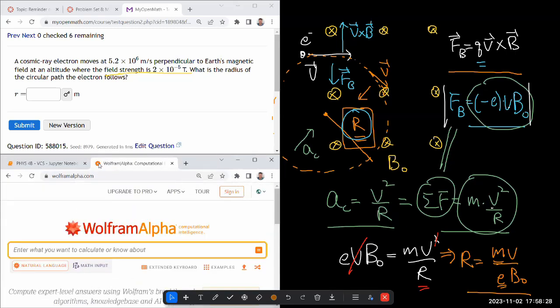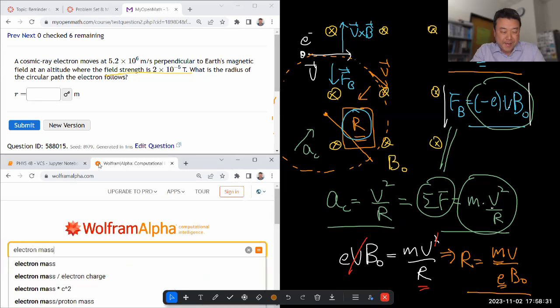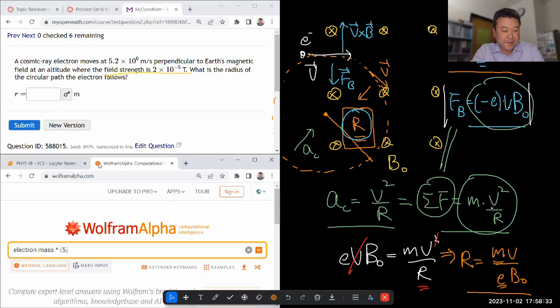So let me use Wolfram Alpha instead. If I use Wolfram Alpha, I can write down electron mass times the speed they gave us, 5.2 times 10 to the power of 6 meter per second. With Wolfram Alpha, I like to put in units. I have to, otherwise the constants it looks up is going to be unusable. So all of that divided by elementary charge, less chance of making it negative, times the magnetic field strength, 2 times 10 to the minus 5 tesla.